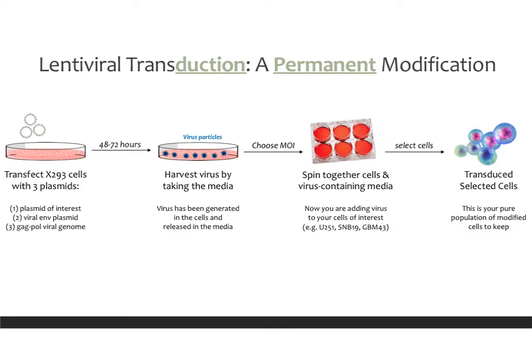The other way to do this is transduction, which is a permanent modification of your cells. It's a little more complicated, but it doesn't take very long and it can generate stable lines with your modification. You'll have a stock of lines you can constantly use to do whatever experiments you want, without having to keep transfecting over and over again.